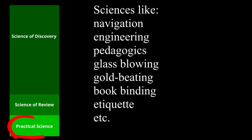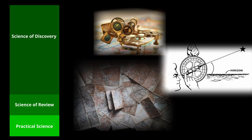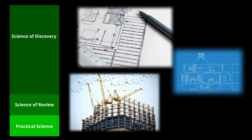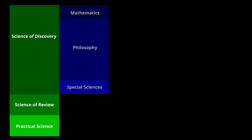Practical science is a science used for particular purposes and as a tool for conduct. For example, navigation uses general sciences like mathematics, physics, and meteorology for the particular purpose of getting a ship from point A to point B. Or an engineer uses mathematics, physics, and chemistry in order to build particular buildings. The science of discovery is further divided into mathematics, philosophy, and special sciences.